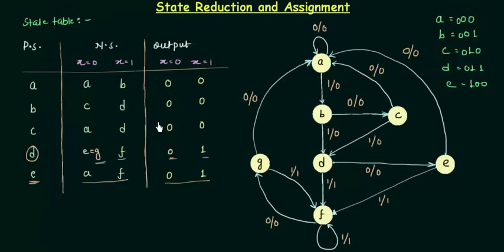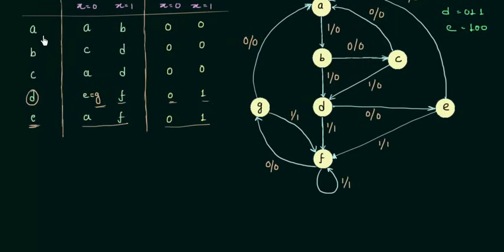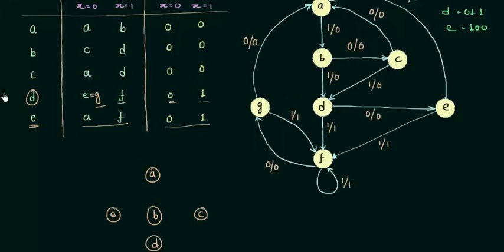We can now modify our state diagram depending upon this reduced state table. We have only five states instead of seven: A, B, C, D, and E. Let's draw the transitions. When on state A with input 0, the next state is also A with output 0. When input is 1, I go to B with output still 0.